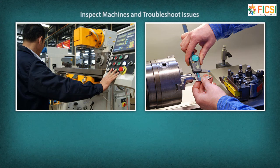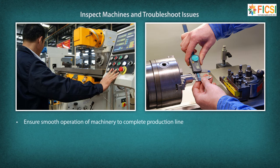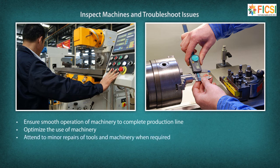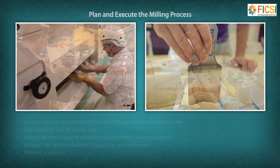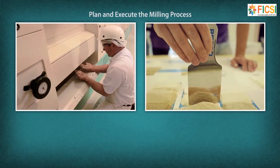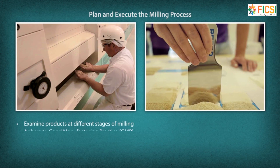The Chief Miller inspects machines and troubleshoots issues, ensures smooth operation of machinery to complete the production line, optimizes the use of machinery, attends to minor repairs of tools and machinery, ensures safety rules and regulations are observed, prevents accidents, plans and executes the milling process, and examines products at different stages of milling.